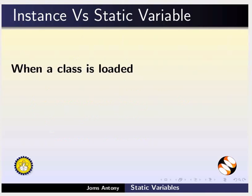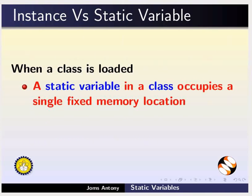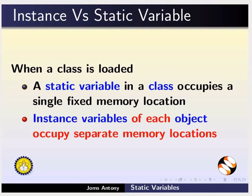When a class is loaded, a static variable occupies a single fixed memory location. Whereas, instance variables of each object occupy separate memory locations.